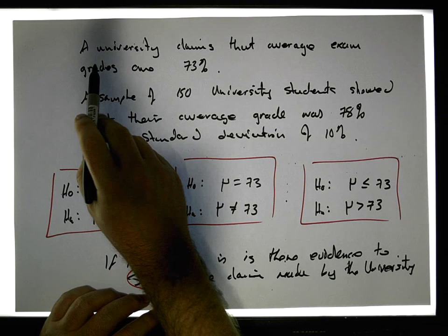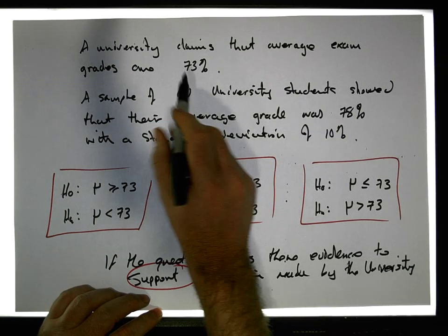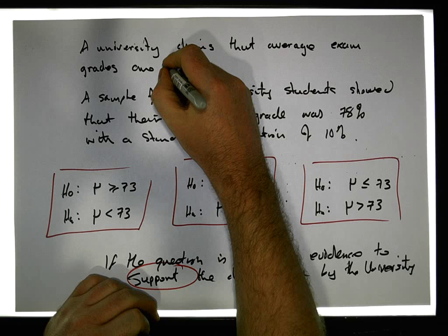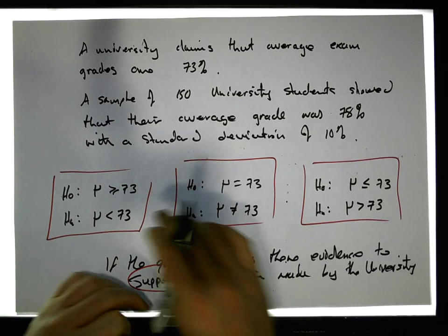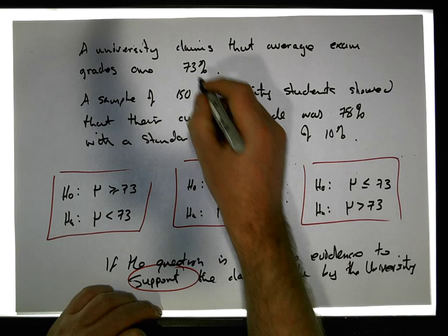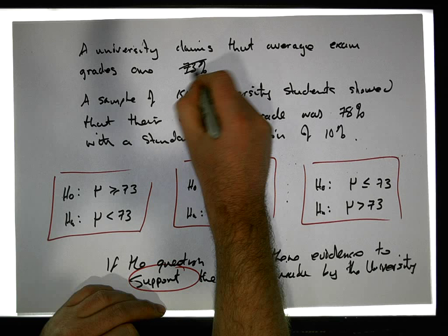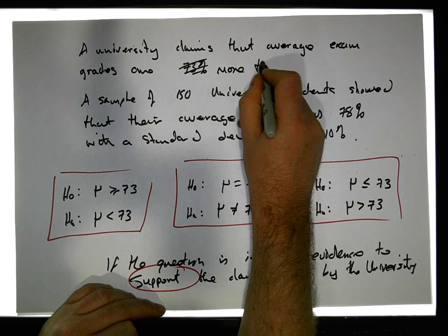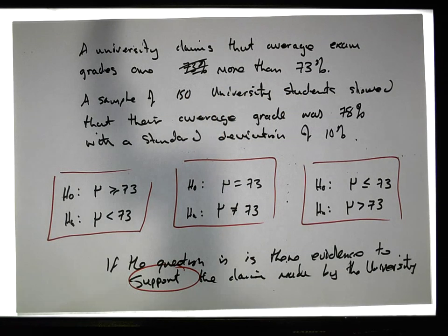Let's say the university claims that the average exam grades are more than 73%. I'd like to do the one-tailed test because it's more complicated. So the claim they're making is more than 73%.